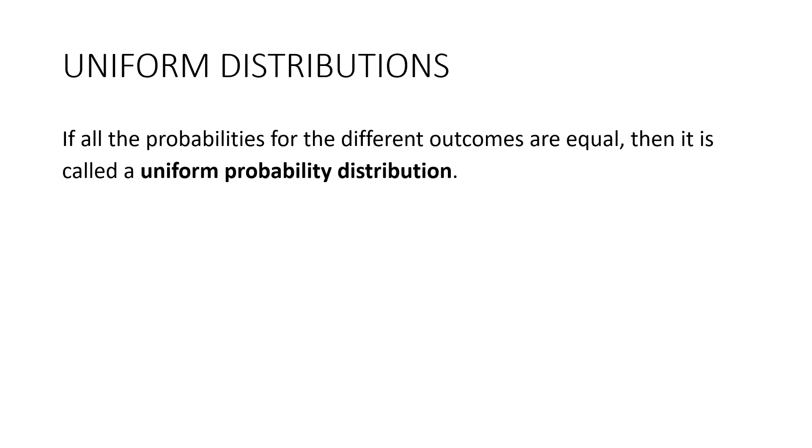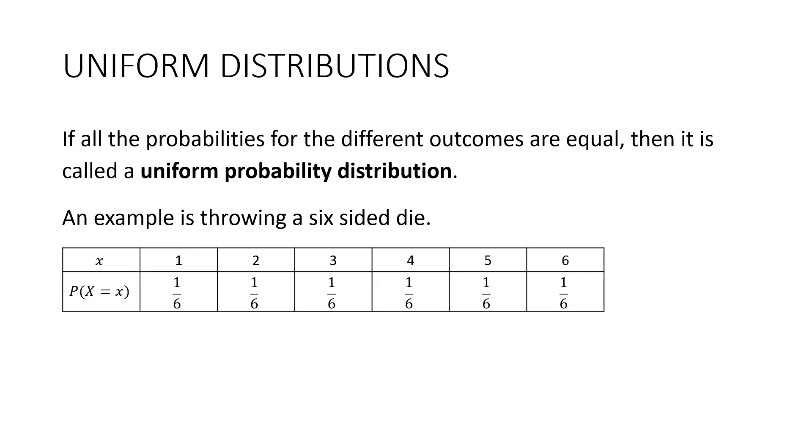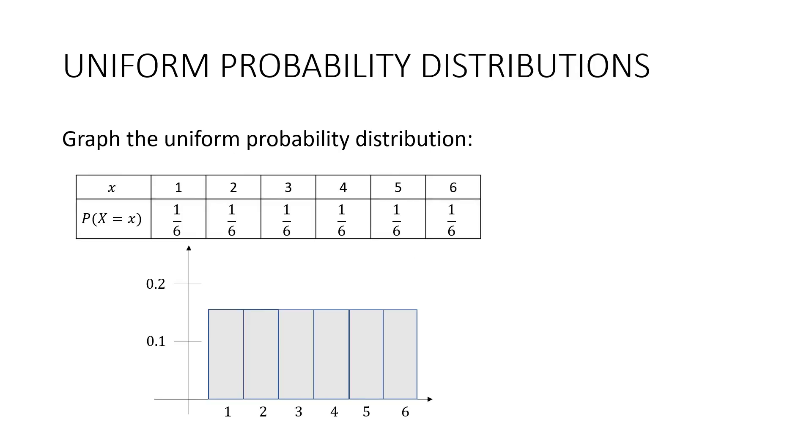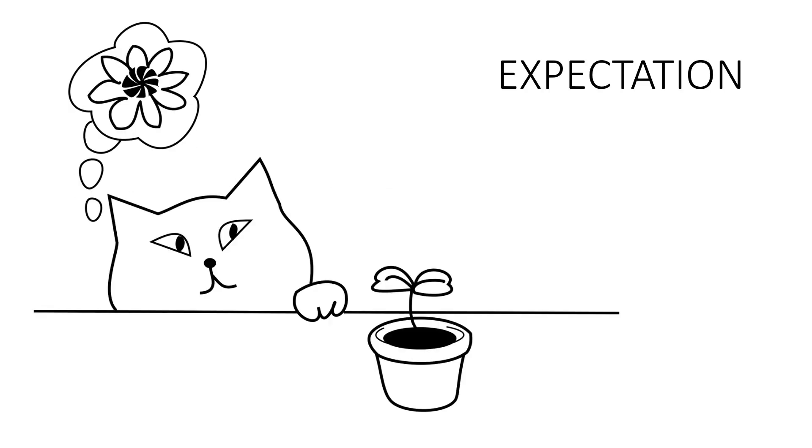If all the probabilities for the different outcomes are equal, then we call it a uniform probability distribution. You can probably think of a few examples where this is the case, but a really common one is a six-sided die. All the values are the same. They're all 1 6th. Now, surprisingly, if we graph a uniform probability distribution, all of these columns will end up the same height.